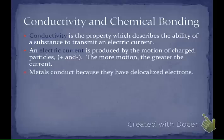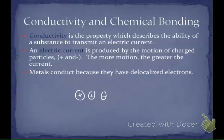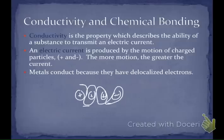Metals conduct because they have those delocalized electrons. When we talked about a metallic bond, we say it's the positive metal nuclei surrounded by those delocalized electrons that are constantly moving around. That constant motion of those charged particles makes metals very, very good conductors.